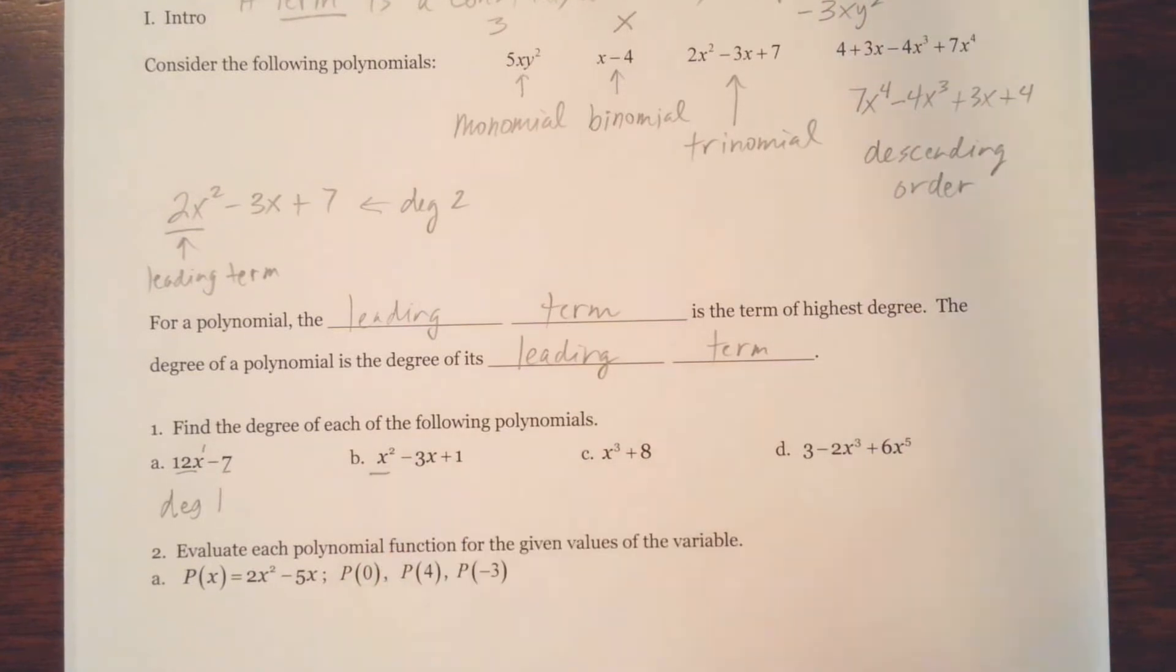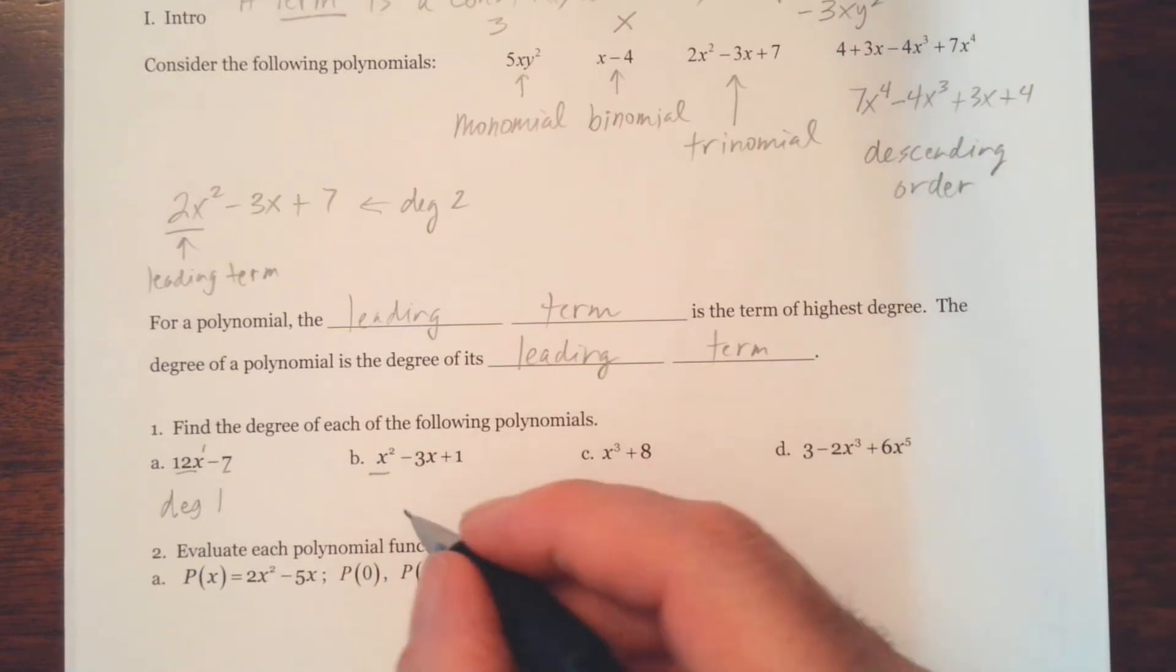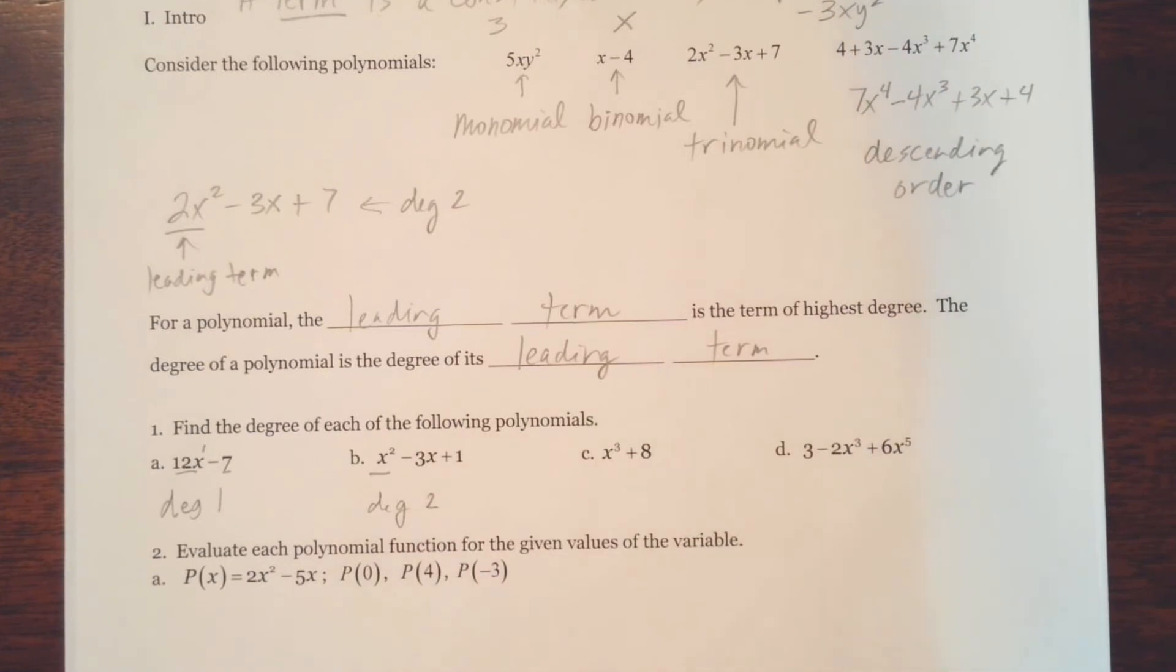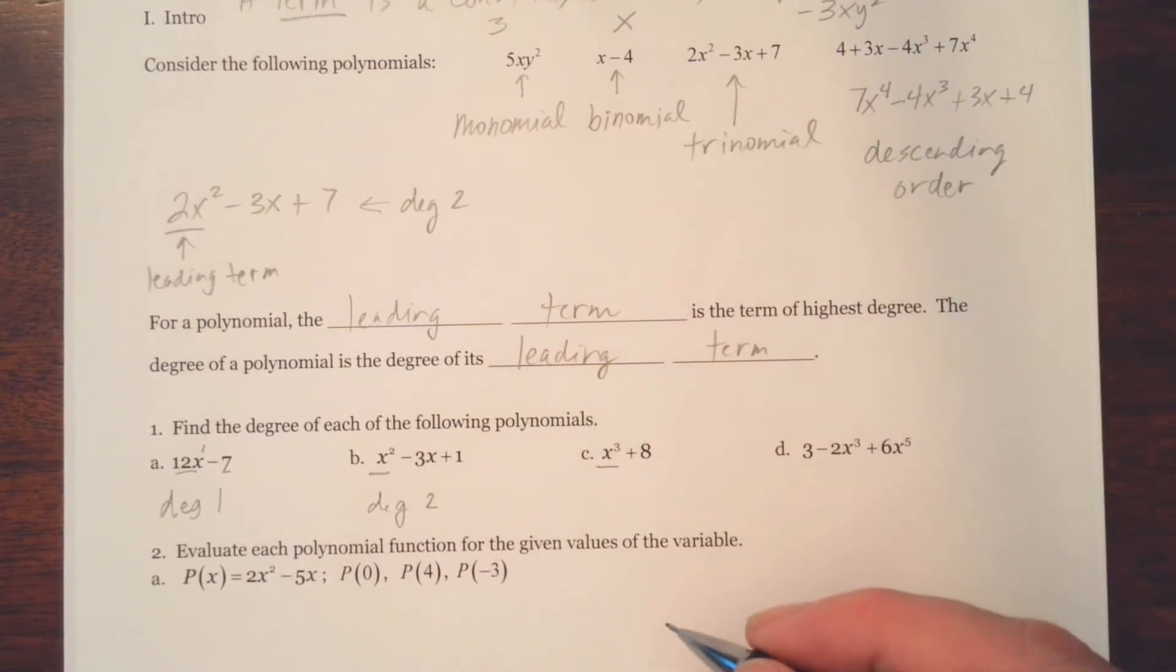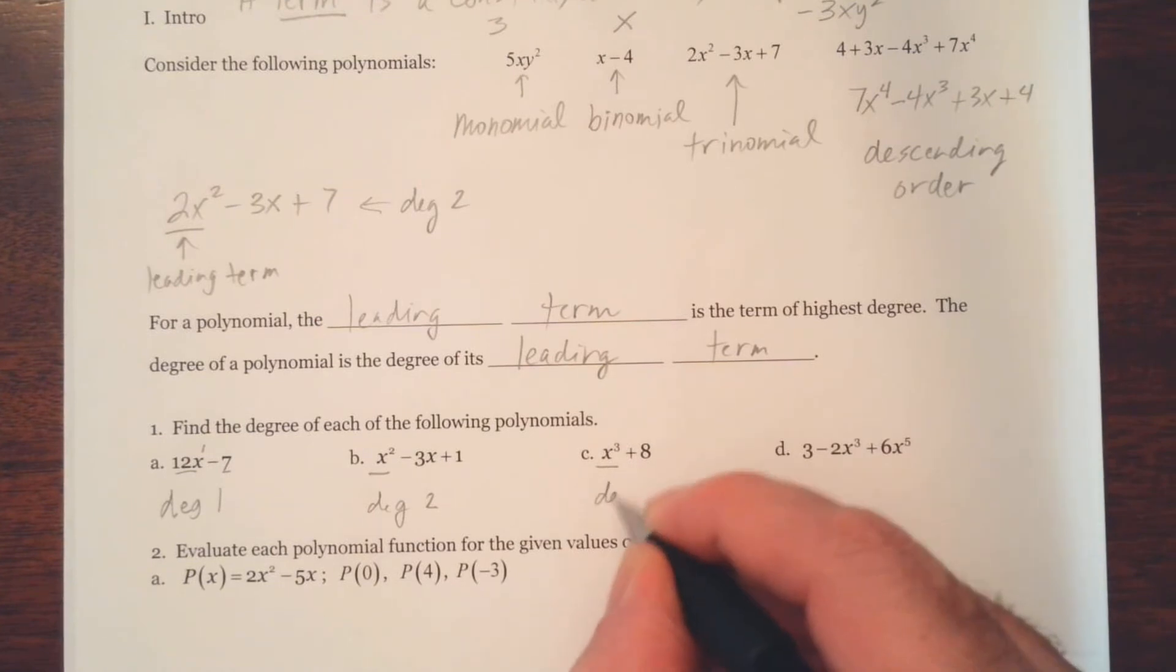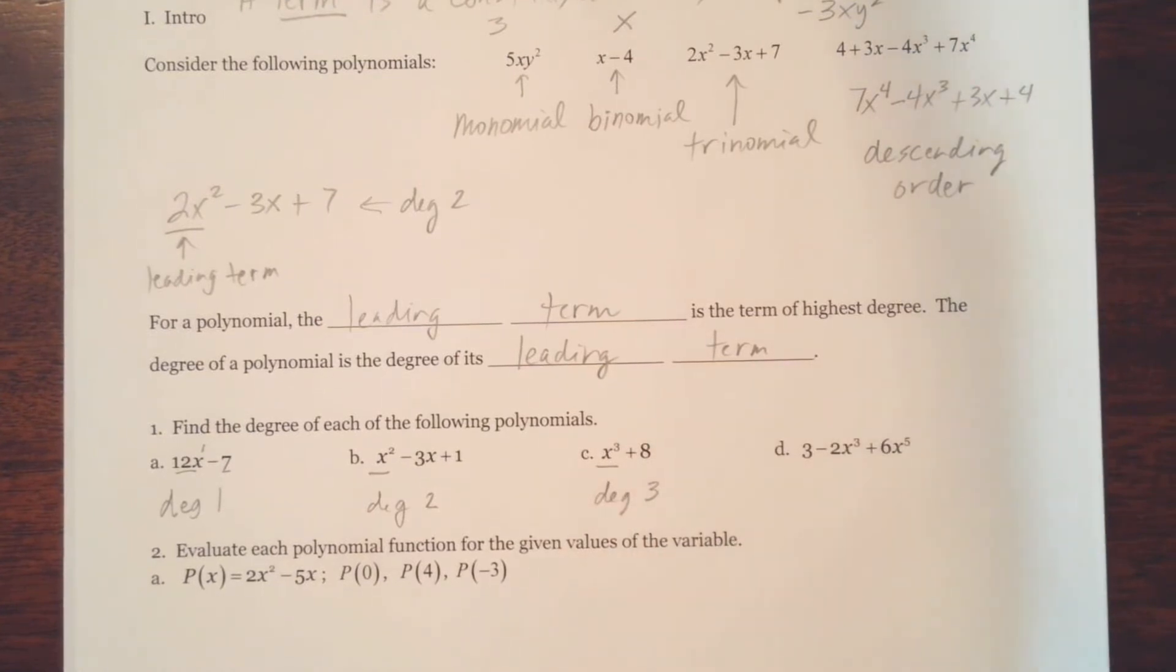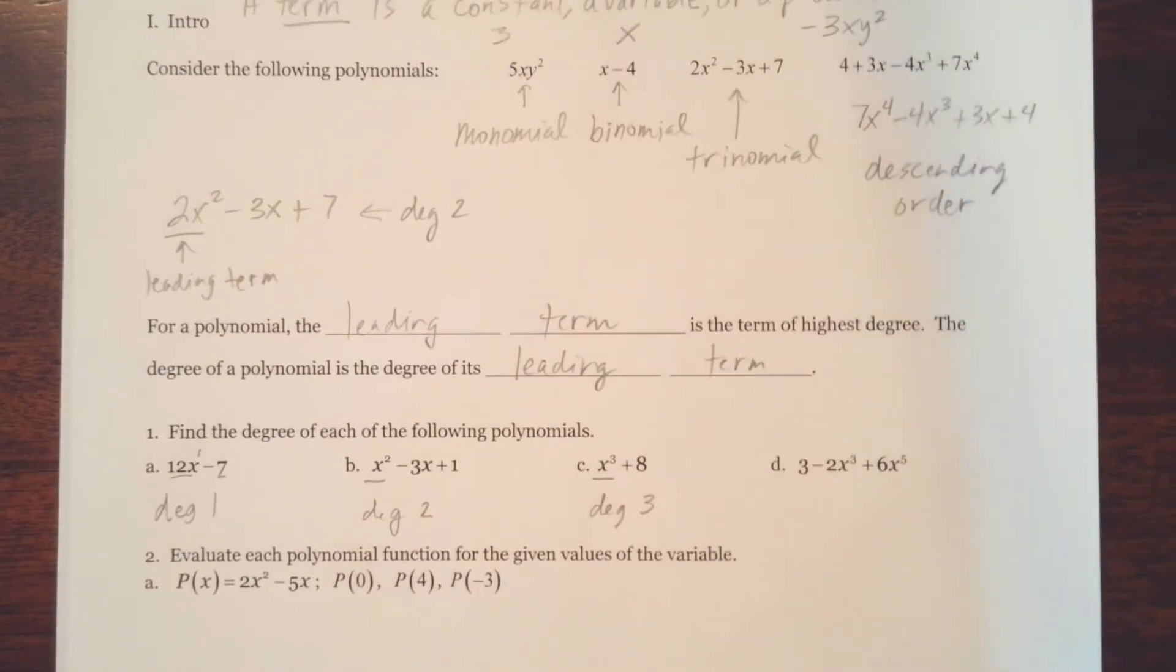Notice here, our leading term is x squared, which has a degree of 2. So the whole polynomial has a degree of 2. Here, our leading term is x cubed, which has a degree of 3. And so this binomial has a degree of 3.